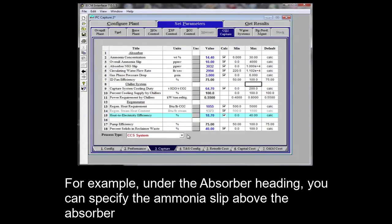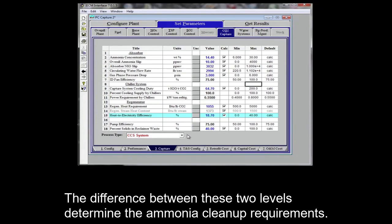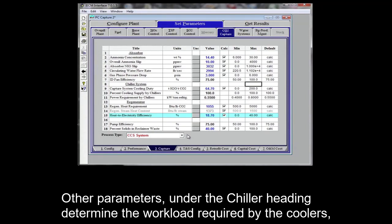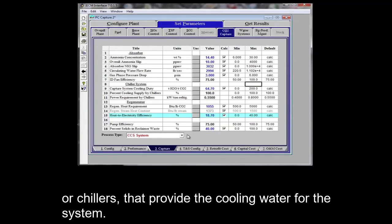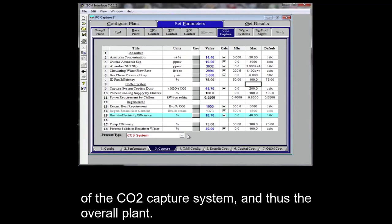For example, under the absorber heading, you can specify the ammonia slip above the absorber as well as for the overall process, which would depend on the emission constraints at your particular plant. The difference between these two levels determine the ammonia cleanup requirements. Other parameters under the chiller heat heading determine the workload required by the coolers, or chillers, that provide the cooling water for the system. Changing any one of these parameters can affect the overall performance and cost estimate of the CO2 capture system and thus the overall plant.